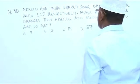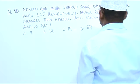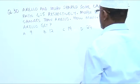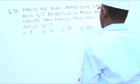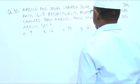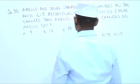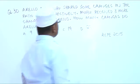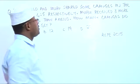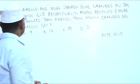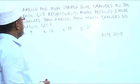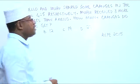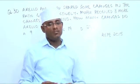Akelo and Muhu shared some oranges in the ratio 4 is to 5 respectively. Muhu received 3 more oranges than Akelo. How many oranges did Akelo get?